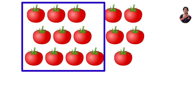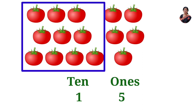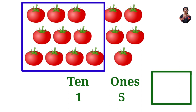Next: tomatoes. In a box, ten tomatoes and how many ones are here? One, two, three, four, five. That is one ten and five ones. What will be the number? The number is one five — fifteen. In fifteen: one ten and five ones.